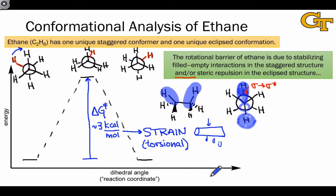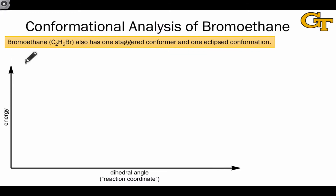We'll see other types of strain as well. All of these have in common the idea that they cause an increase in the energy of a molecule relative to a more stable conformation. The molecule bromoethane, which is related to ethane, also has one staggered conformer and one eclipsed conformer.